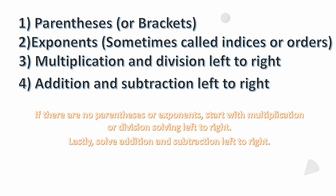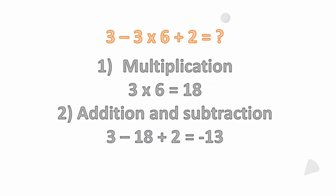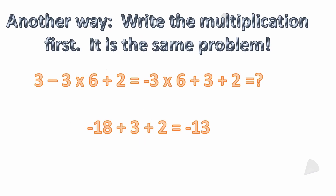Let's get into this. First, you do multiplication: 3 times 6 is 18. Then you do your addition and subtraction — this is where some people really mess it up. 3 minus 18 plus 2 equals minus 13. So the correct answer to this is minus 13.